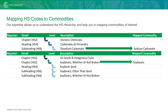Trade data, as reported by national statistical authorities, is structured and organized under the Harmonized system. This is a multi-layered coding system introduced in 1988, which has since been adopted by more than 200 countries. It essentially identifies a commodity under a chapter, a heading, and a subheading, which in all corresponds to a six-digit code.